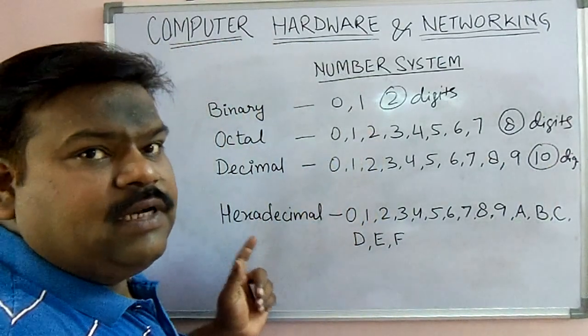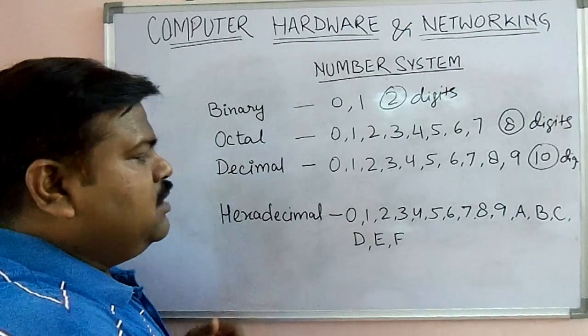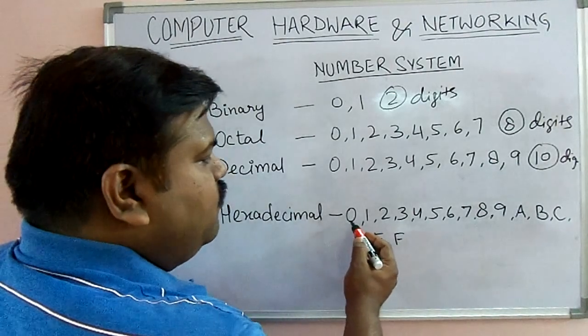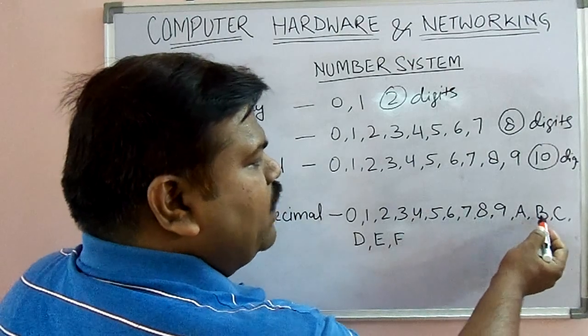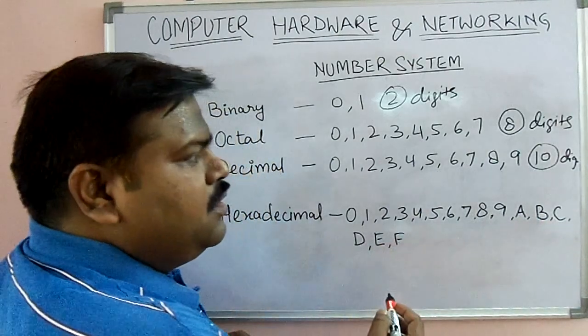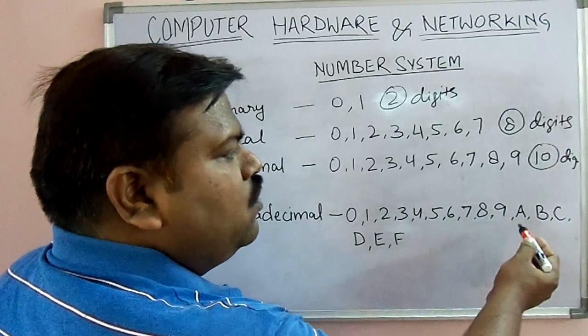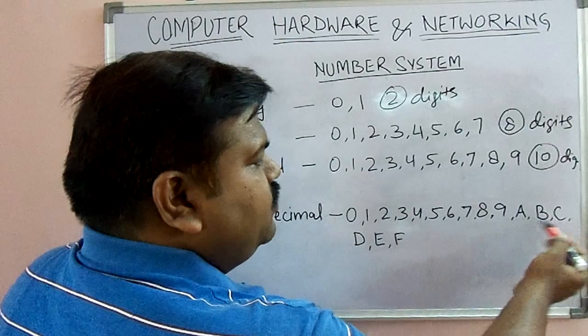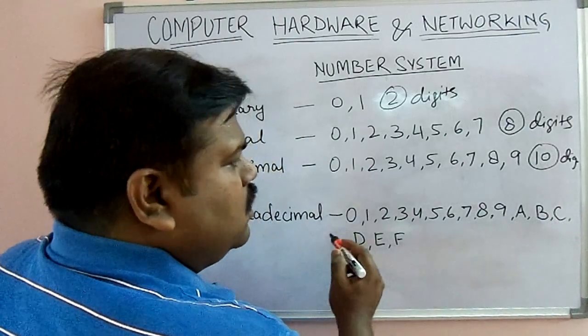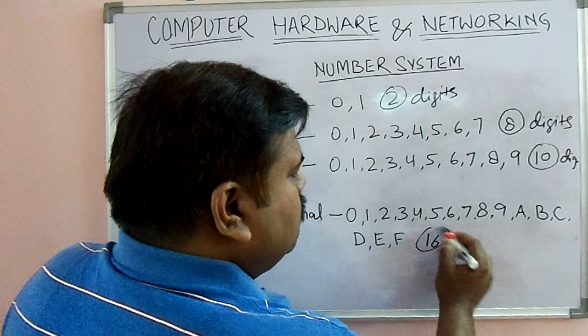Likewise, in hexadecimal there are sixteen digits. From starting here, one, two, three, four, five, six, seven, eight, nine, ten, eleven, twelve, thirteen, fourteen, fifteen, sixteen. Because there are no numbers after nine, in hexadecimal alphabets are used: A, B, C, D, E, F. So counting all these will get sixteen digits.